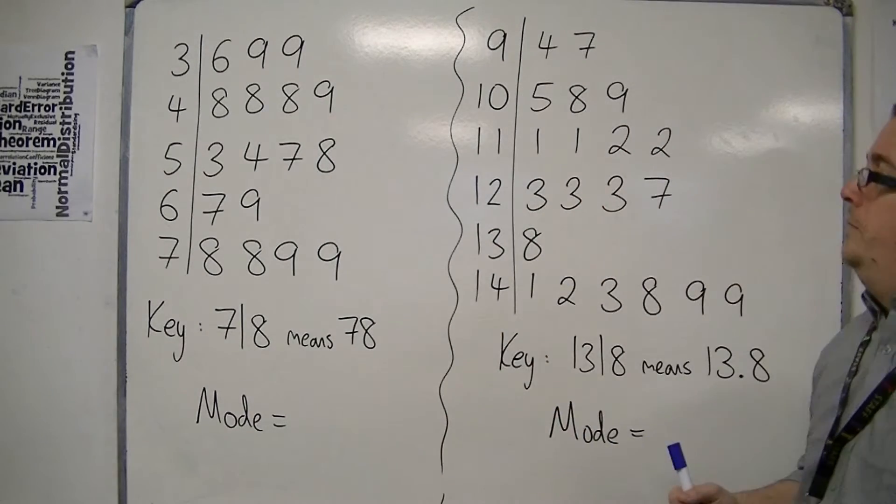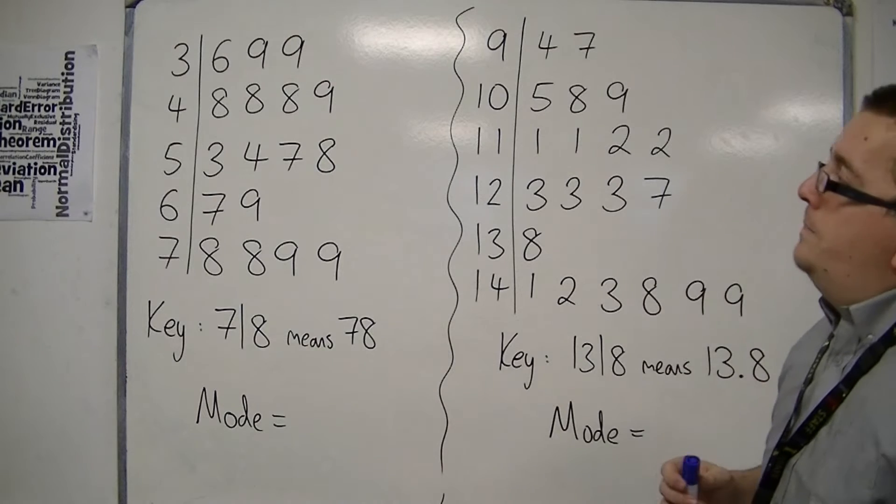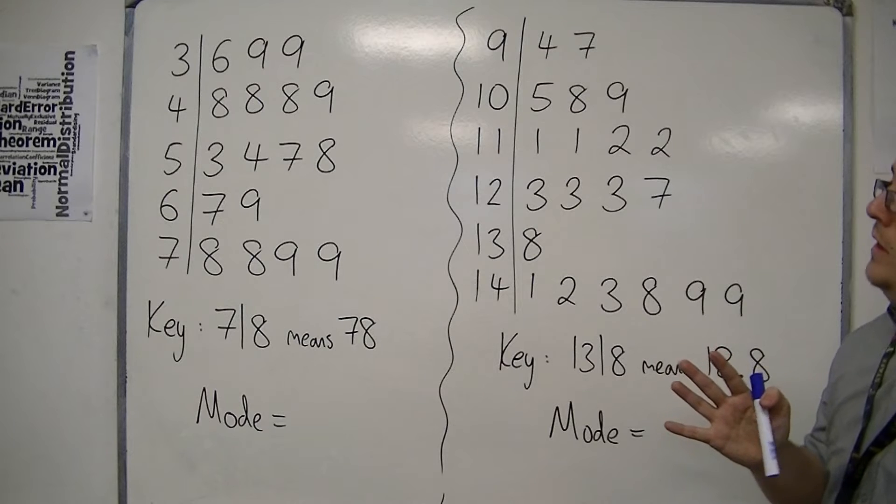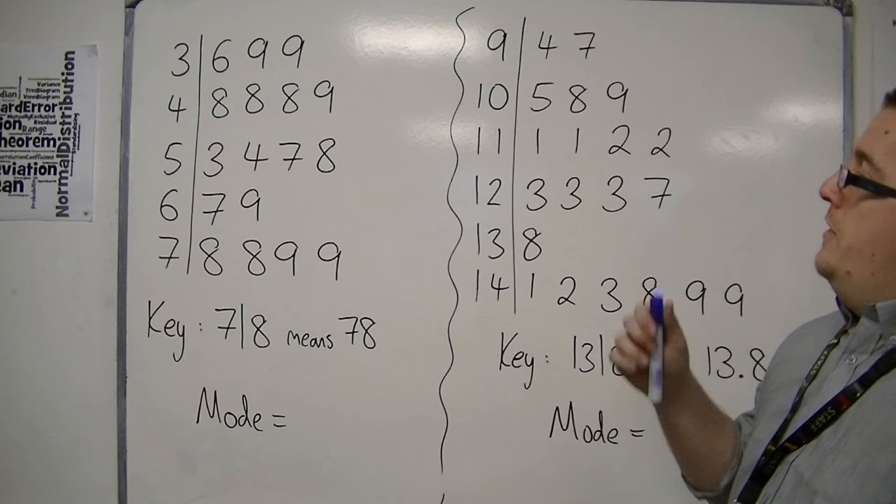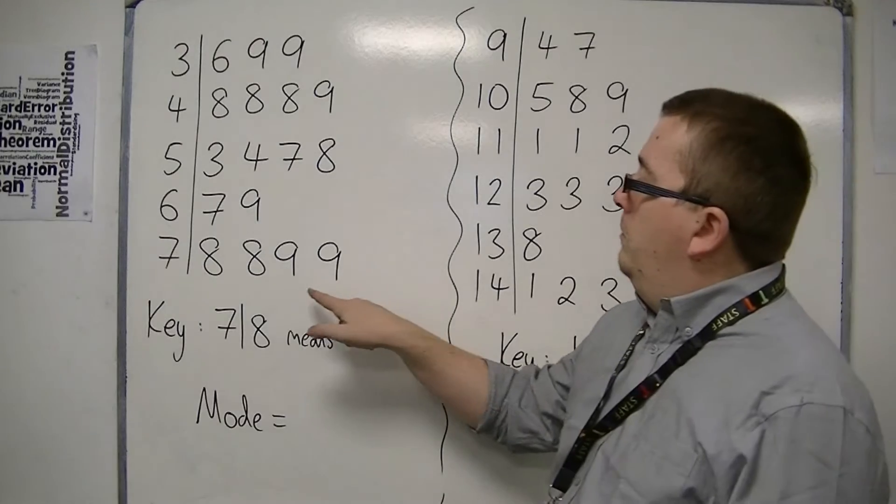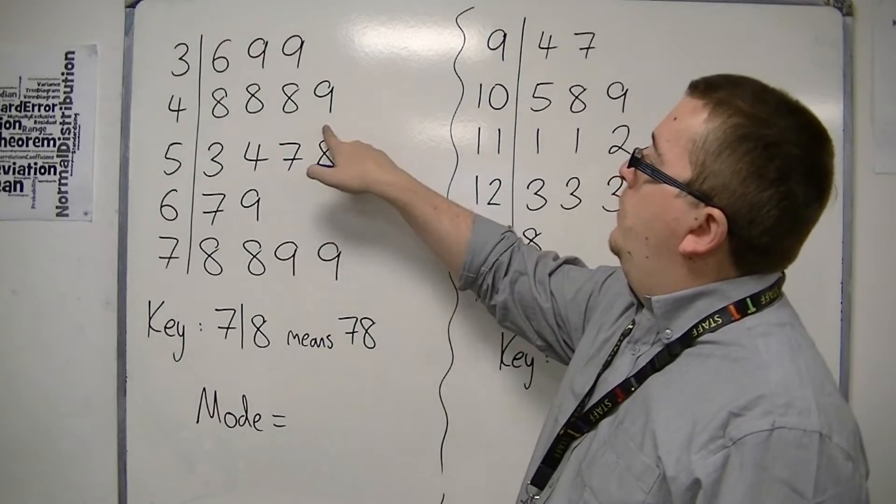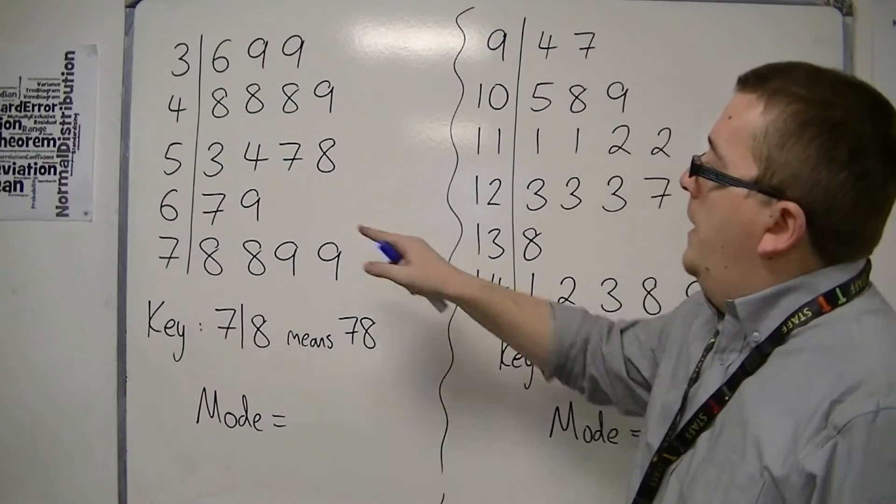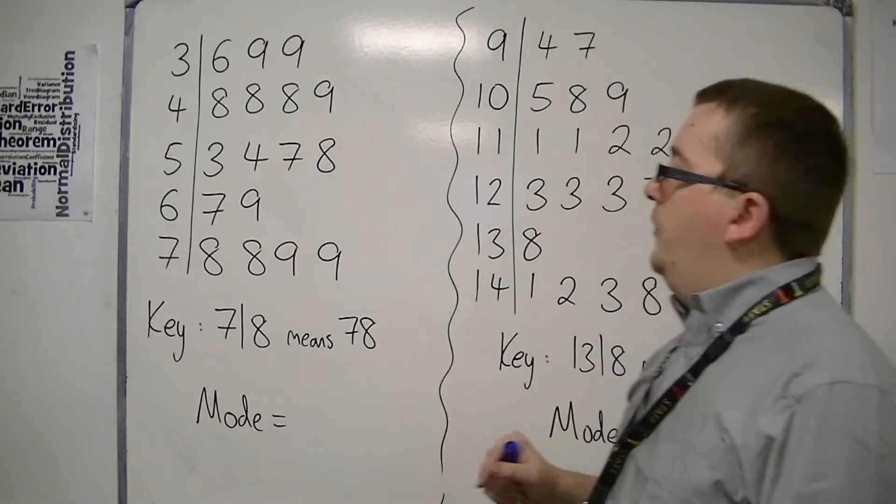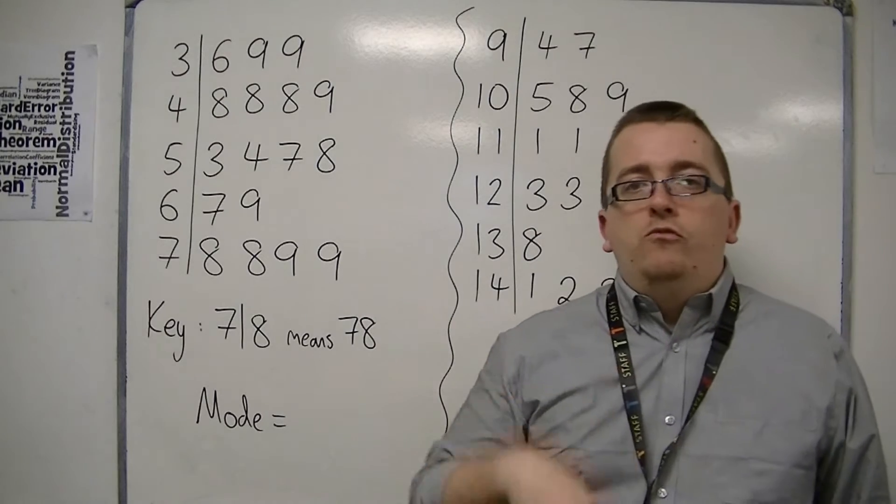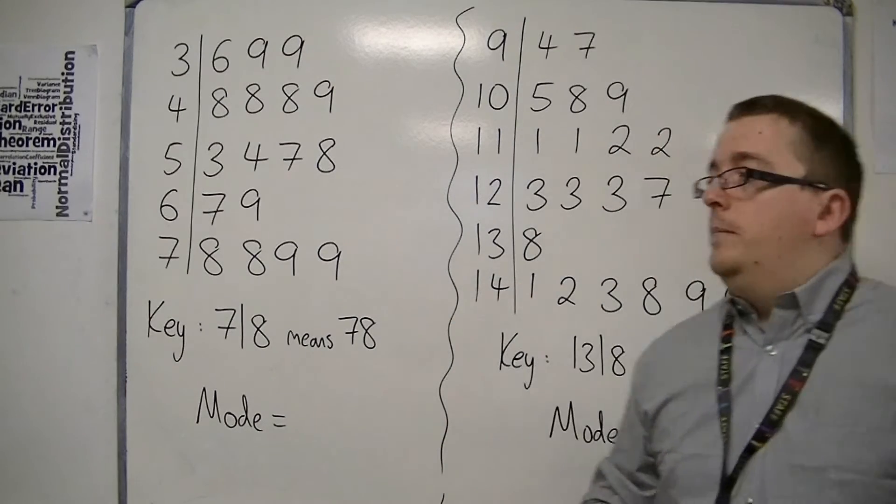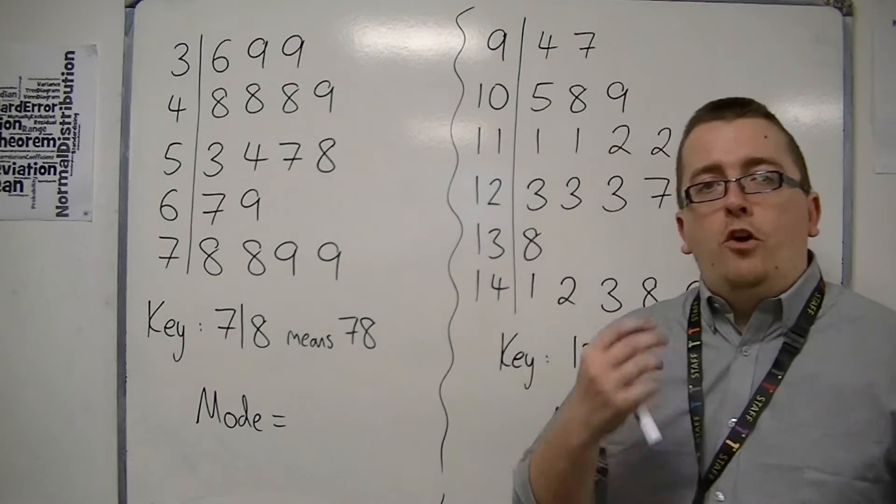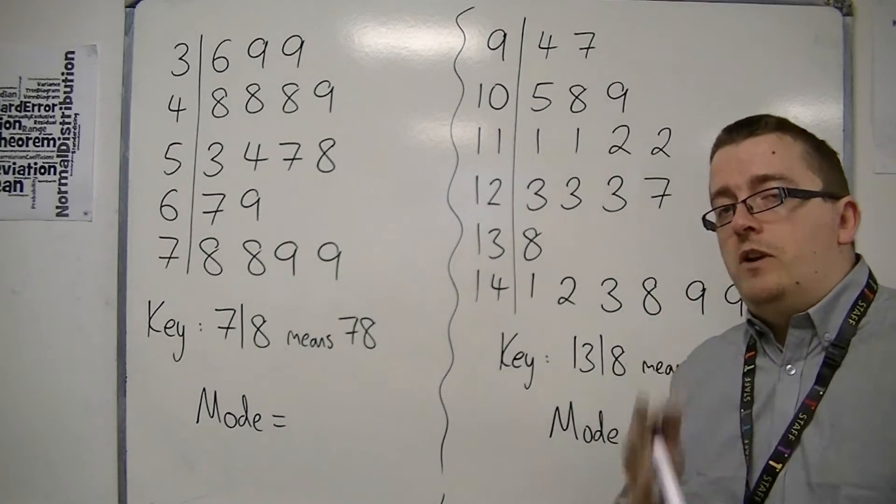So with this first example, what you might be looking at is you're thinking, OK, I'm looking for the most common number. And you might think to yourself that 9 comes up 6 times, 8 comes up 5 times, and really you're looking at this in the wrong way. Because if you think 9 is the mode, then we're not reading from the stem leaf diagram correctly.